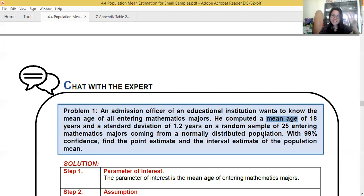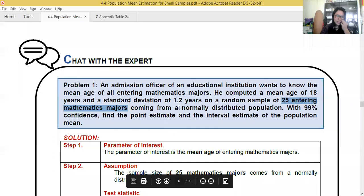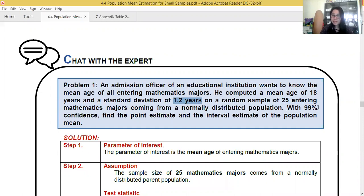Step two, ATC, assumption. How many people are there? There are 25 entering math majors. So the sample size is small because it's below 30. How do we state our assumption for small sample size? We say the sample size of 25 math majors comes from a normally distributed parent population. And since it is a small sample size, the test statistic is t-test with a standard deviation of 1.2 years. Next, confidence level. That's 99%. So our significance level or alpha is 0.01.